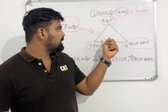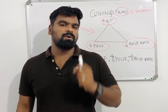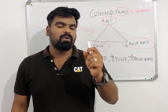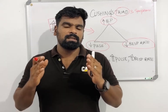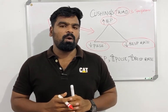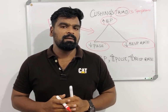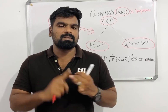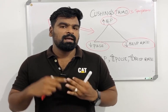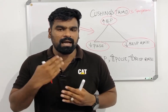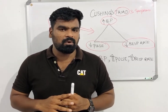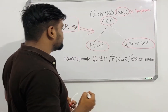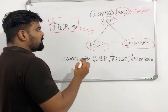So Cushing's Triad represents the major features of increased intracranial pressure. It is commonly seen in conditions like meningitis, stroke, cerebral palsy, and hydrocephalus.